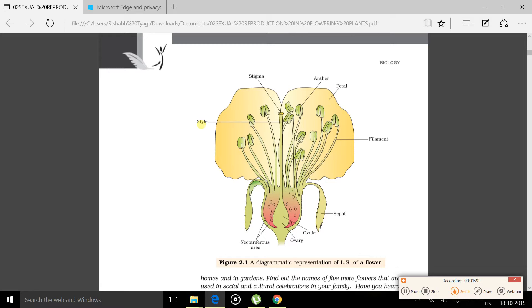The third part is calyx. Calyx consists of a whorl of sepals - many sepals make a calyx. The fourth part is corolla. Many petals make a corolla. And these parts we will learn in detail under the sub-topics: male reproductive system and female reproductive system of flowering plants.